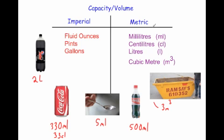Let's have a look at capacity — measuring how much liquid fits into a container, or how much space is inside an object. Imperial units used in the UK, America, and Australia include: fluid ounces, which used to be used a lot for cooking though now I tend to use milliliters; pints — we do use pints, a pint of milk or a pint of beer; and gallons — in America you'd see gallons of milk or gallons of petrol.